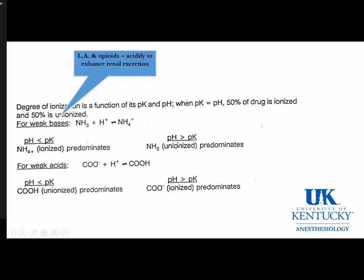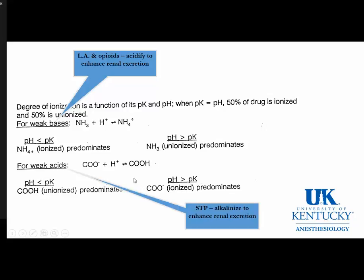In an alkalotic environment, drugs like local anesthetics and opioids, which are weak bases, would have an active form. Comparing this to weak acids, barbiturates such as sodium thiopental are used as a model for pharmacokinetic modeling. Sodium thiopental is a weak acid.